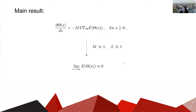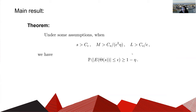Now I want to introduce our main results. Formally, we will show that when m and l are large enough, the loss function will be close to 0 when s is large enough. This is our main theorem. In this result, when we choose s, m, and l large enough, the loss function is small with high probability. This suggests that for a very deep and over-parameterized ResNet, it is very likely that the loss function will be close to 0. The lower bound of m comes from the mean field limit, and the continuous limit gives us the lower bound of l.